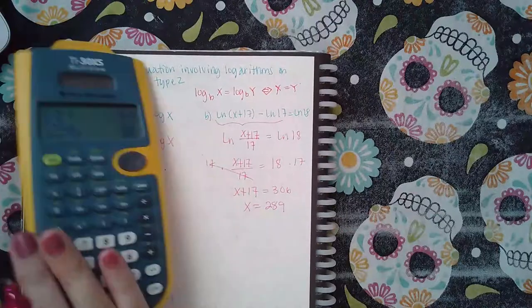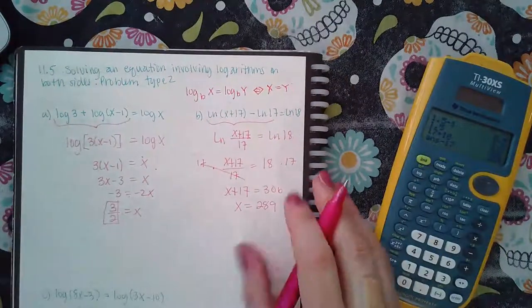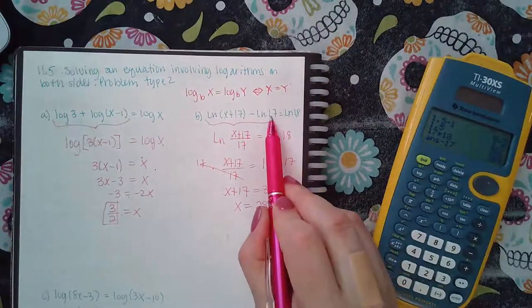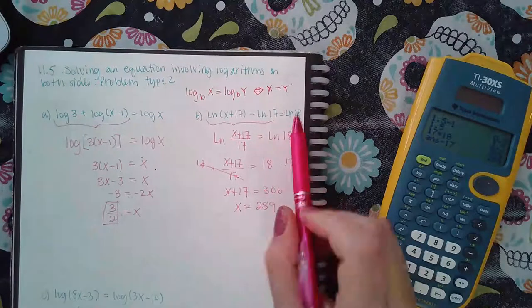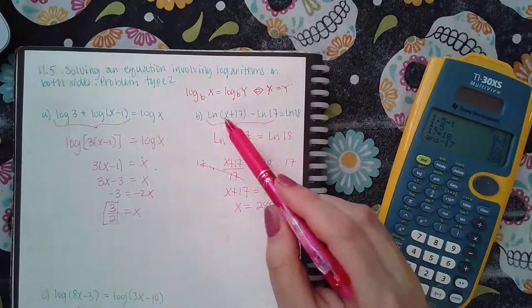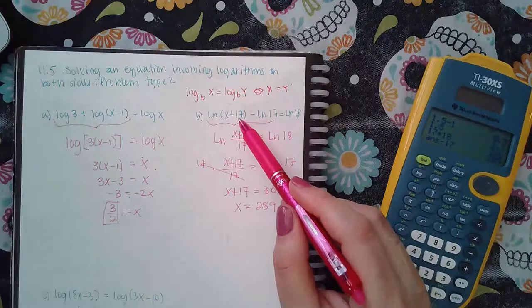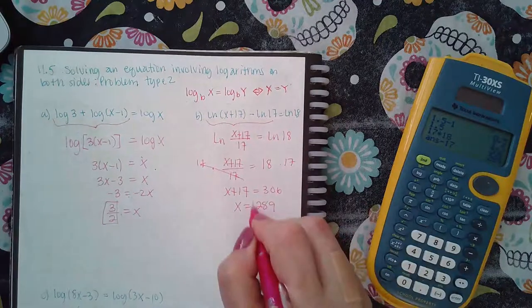Double check that it makes the arguments positive. Now there's no variables here, no variables there, those arguments are positive. Plug in 289 up here, I'm just going to get 306, and that's positive, so this is the answer for that particular problem.